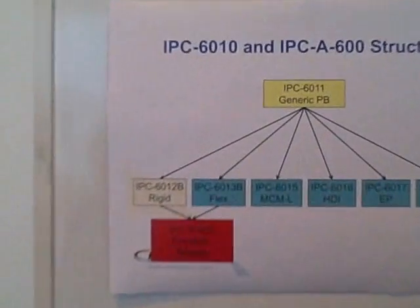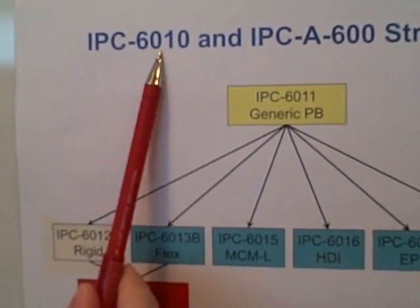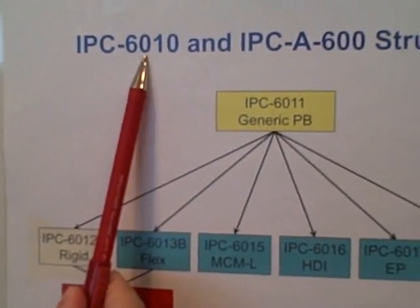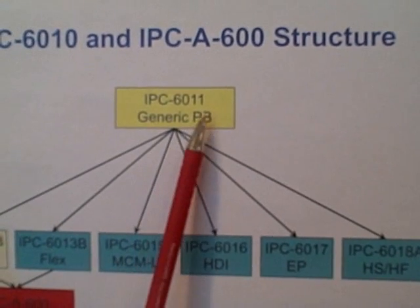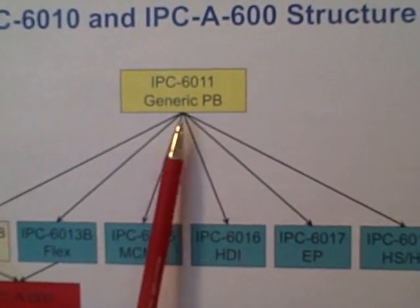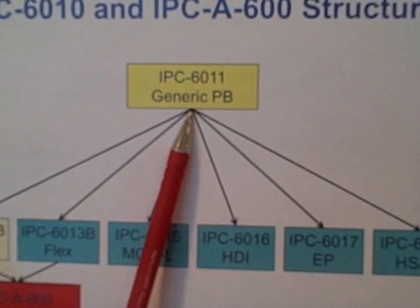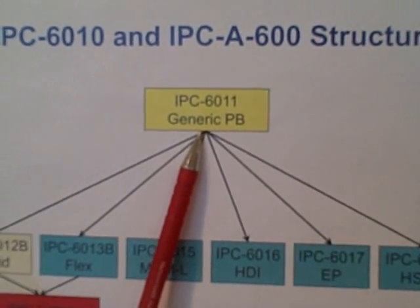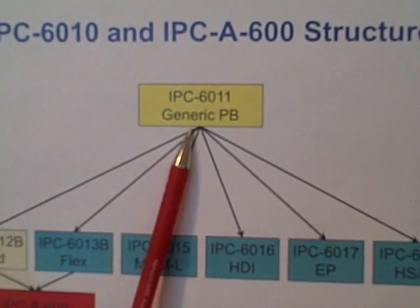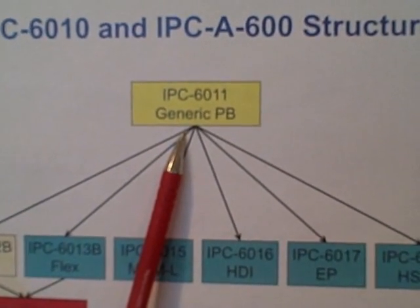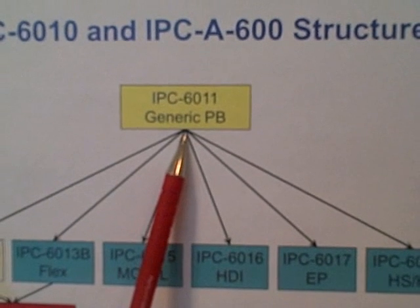What we're going to do here is look at the structure between the IPC 6010 series and IPC A600. Where we're really going to start is with IPC 6011. This is a very generic printed board specification. You won't find within it any actual end product requirements for printed boards, such as tolerances on thickness, bow, and twist.